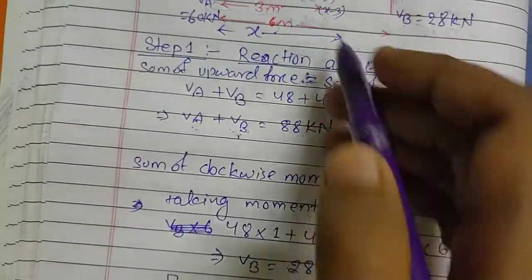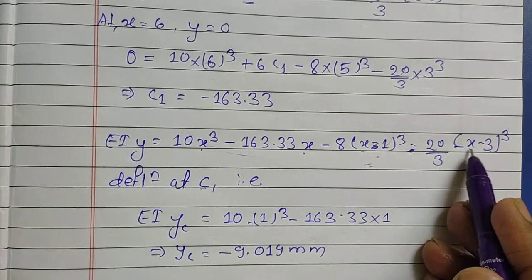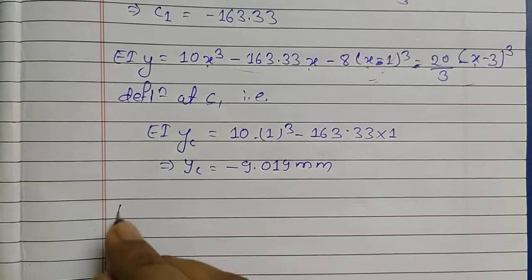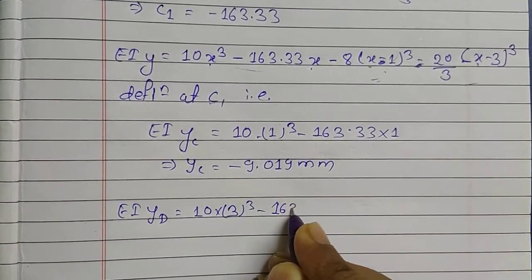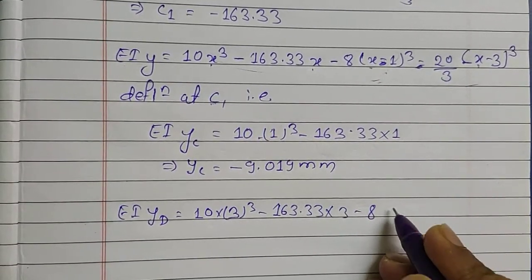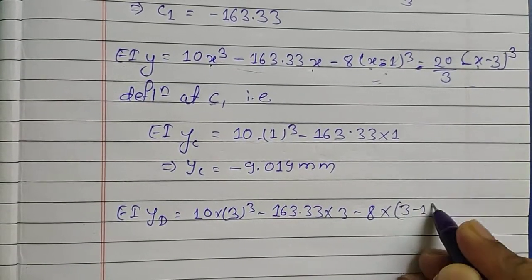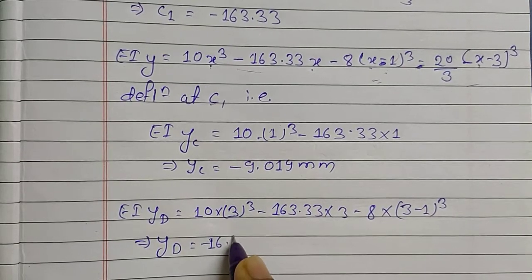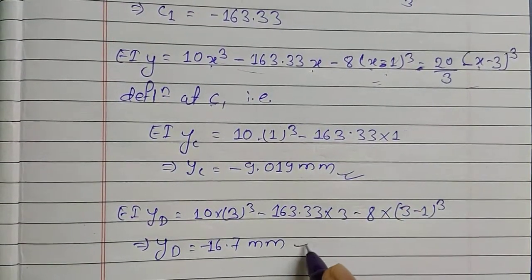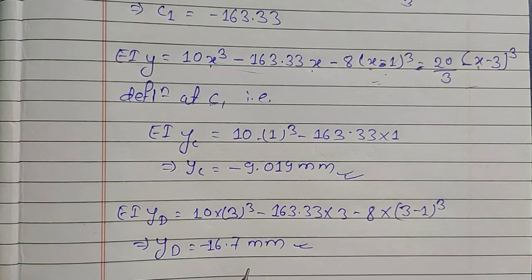For deflection at D, the point is 3 meters from A, so x equals 3. At x equals 3, the term (x minus 3) becomes zero, so we include terms up to that point. Substituting x equals 3: EI times yD equals 10 times 3 cubed minus 163.33 times 3 minus 8 times (3 minus 1) cubed, and the last term is zero. Solving, yD equals minus 16.7 millimeters.